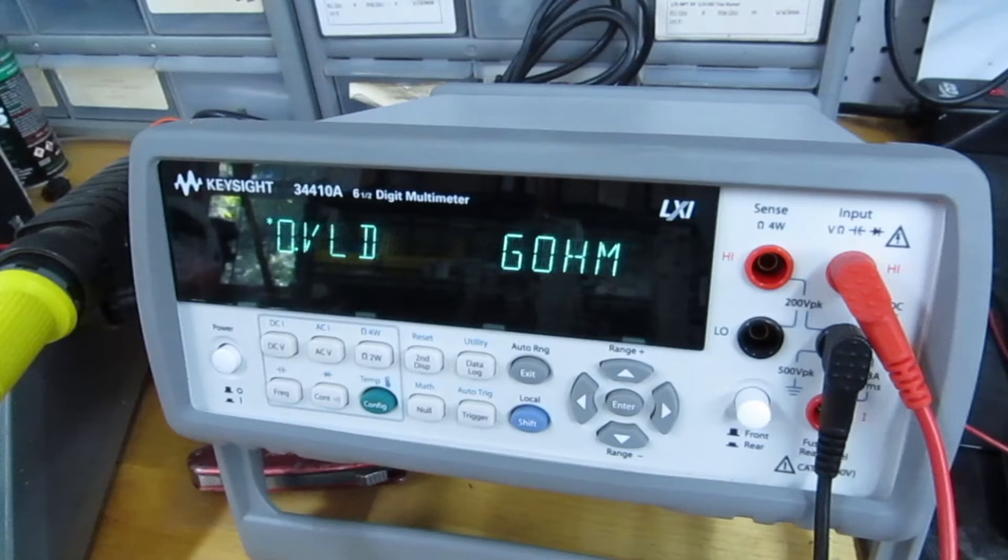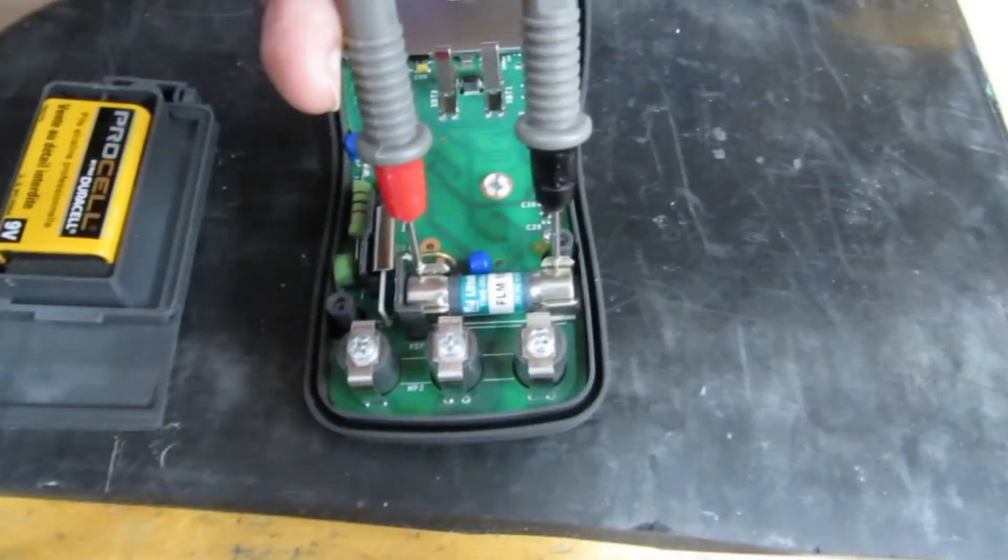So we'll swap the fuse out, and also at the same time we'll change the battery because I noticed that the battery voltage was low. It was only 8.1 volts. It should be 9.0 volts or better. So that's swapped out. New battery, new fuse.